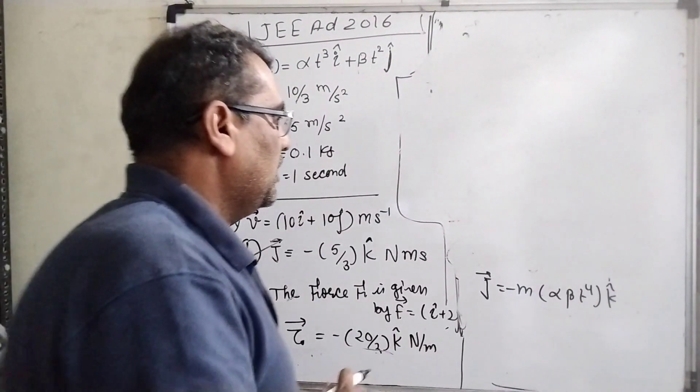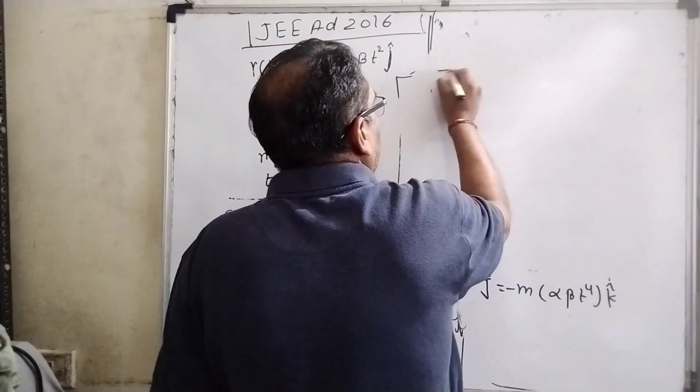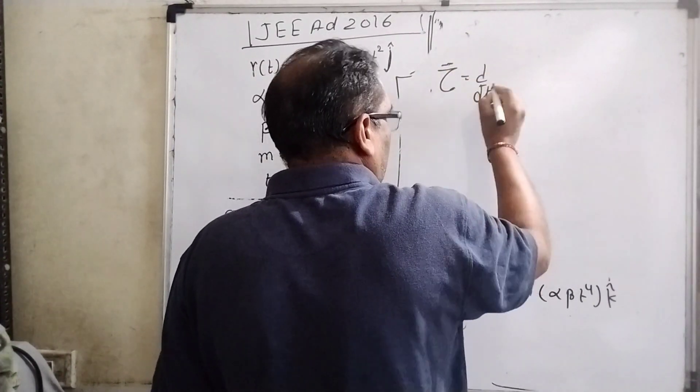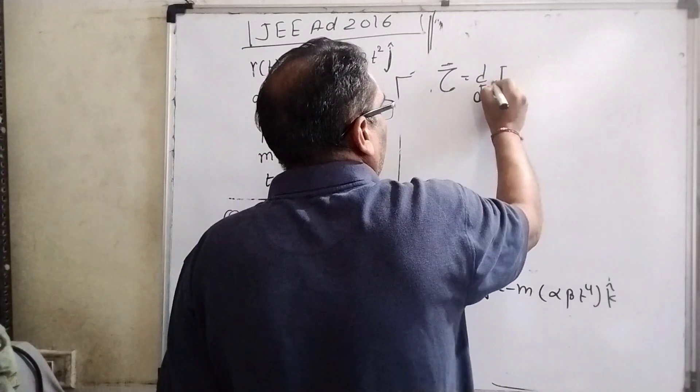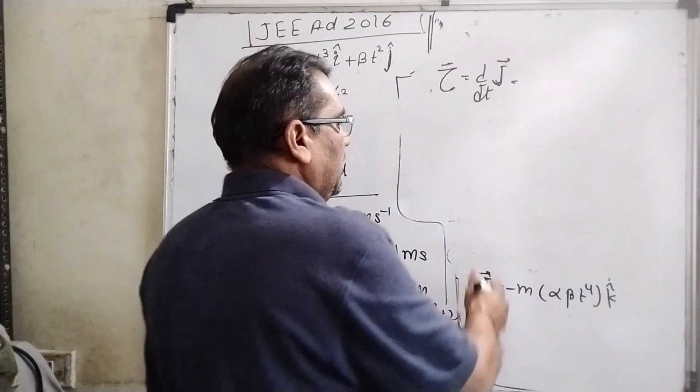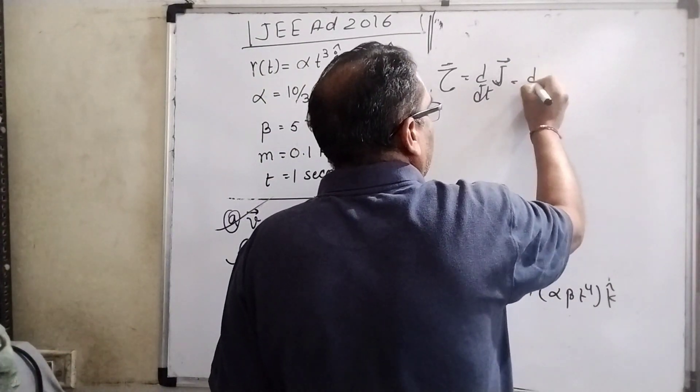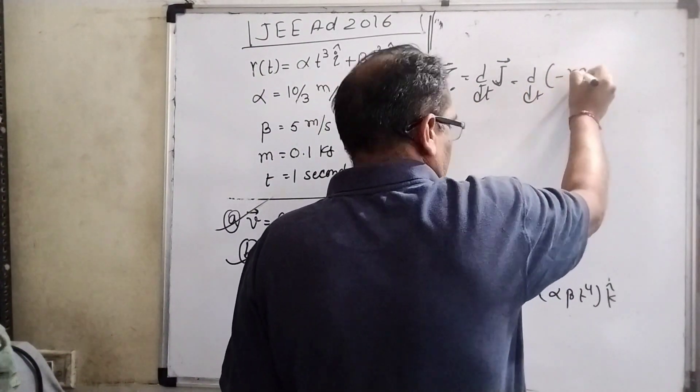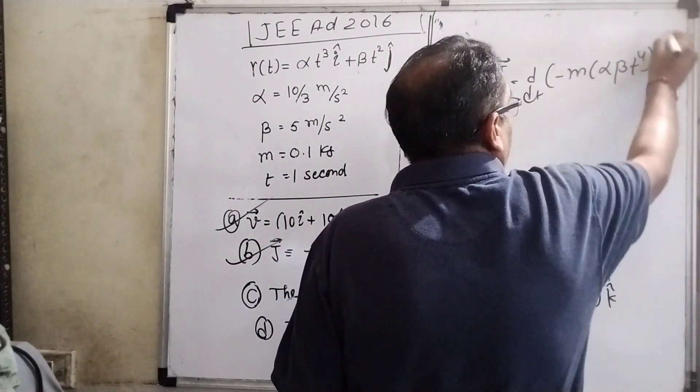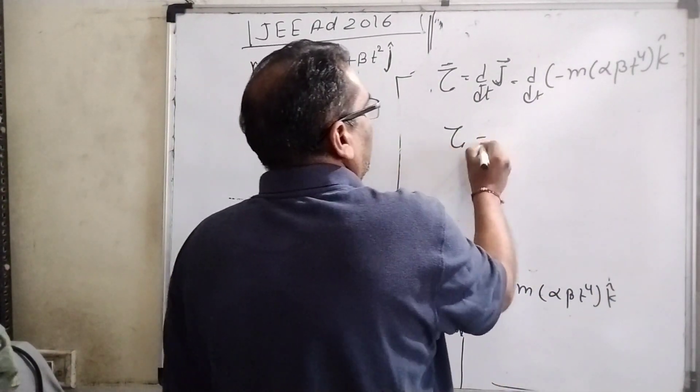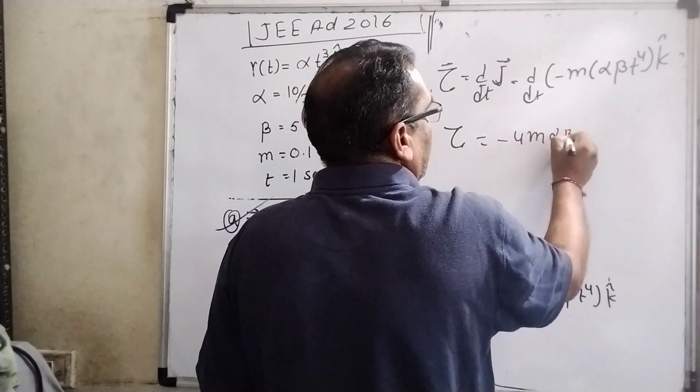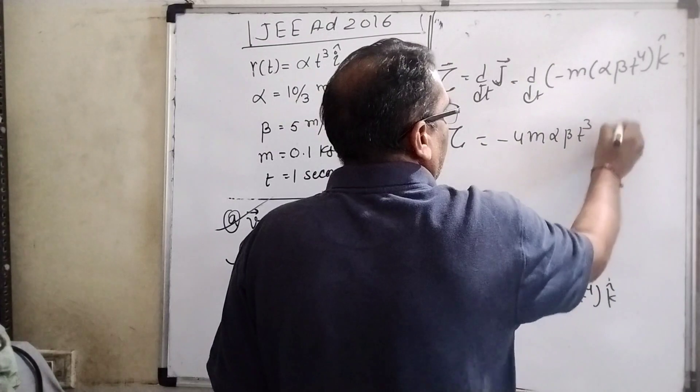As we know that torque equals differentiation with respect to t of angular momentum. What is our angular momentum? d/dt of minus m αβ t⁴ k cap. Then τ equals minus 4m αβ t³ k cap.